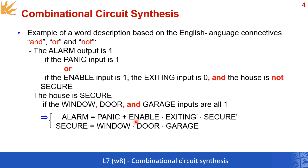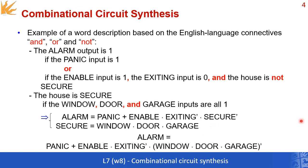So once you get this English language description, you are supposed to be able to write it down carefully in the form of a logic function using OR and AND and NOT. So having that said, you can rewrite the ALARM function, and this time include everything: it's PANIC or ENABLE and not EXITING and WINDOW and DOOR and GARAGE not true, which means not secure.